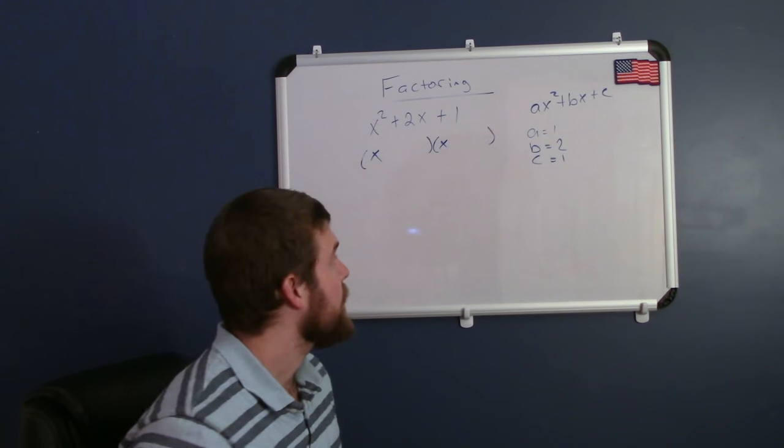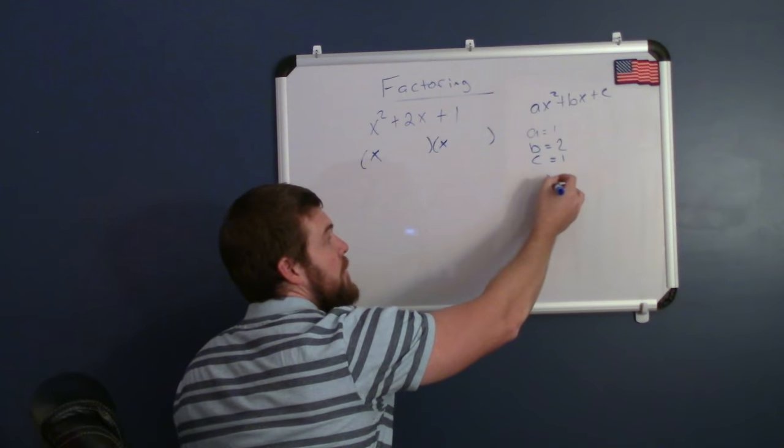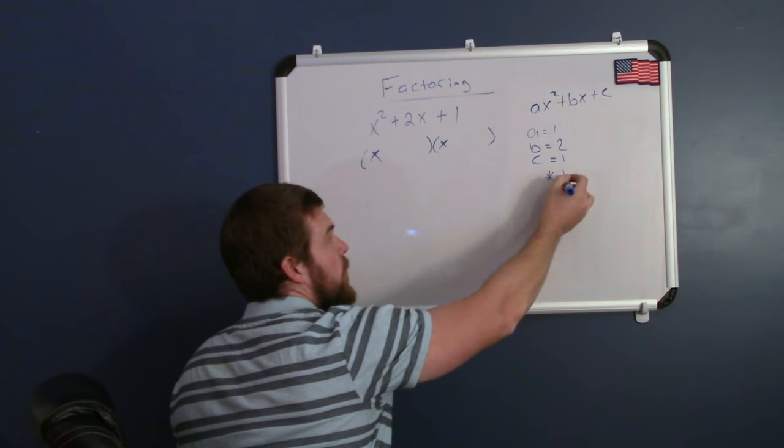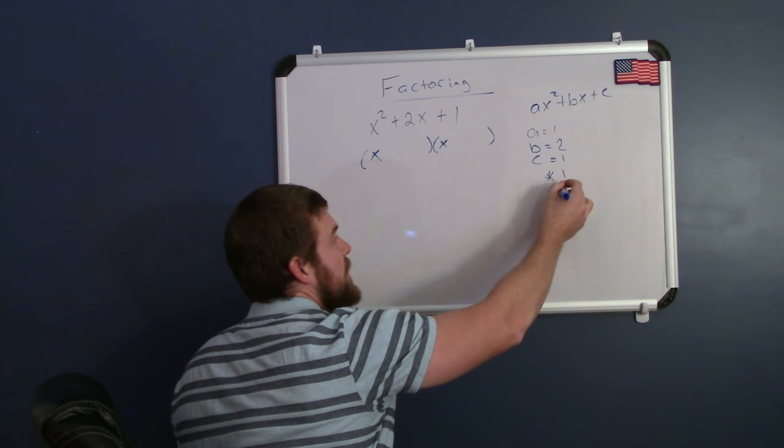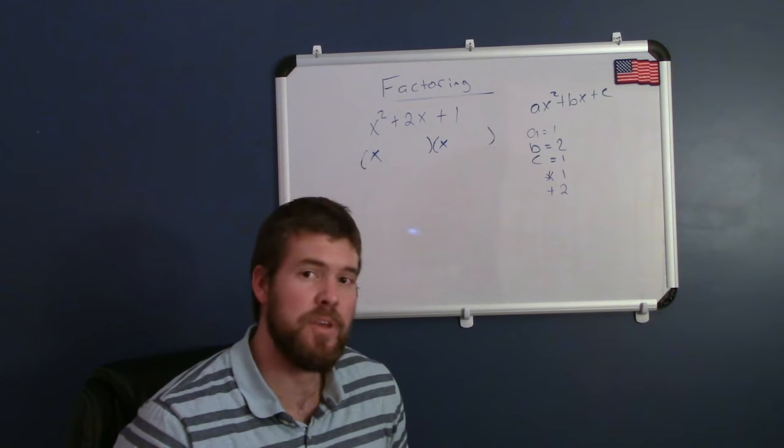So we want to ask the question: what two numbers multiply to be 1 but add to be 2? And this one should be fairly simple.